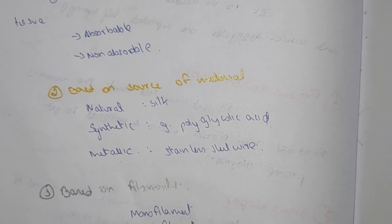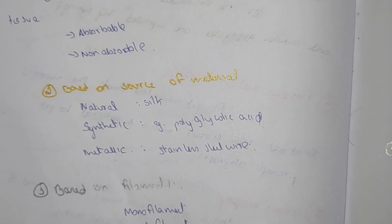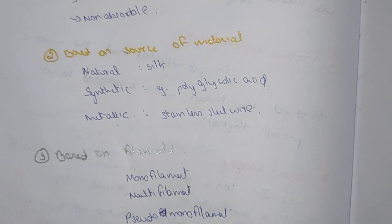Based on the source of the material, it can be divided into natural, synthetic, and metallic. Natural is silk, synthetic is polyglycolic acid, and metallic is stainless steel wire. Based on the filament, it can be divided into monofilament, multifilament, and pseudofilament.